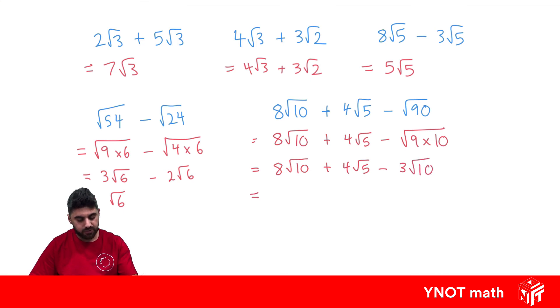And now we can simplify 8 root 10 minus 3 root 10 gives us 5 root 10 plus the 4 root 5.